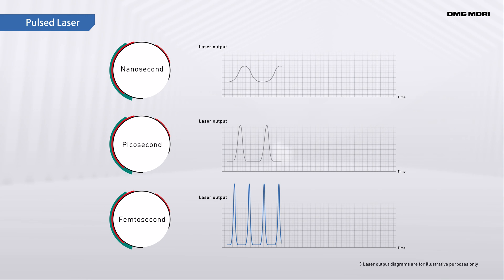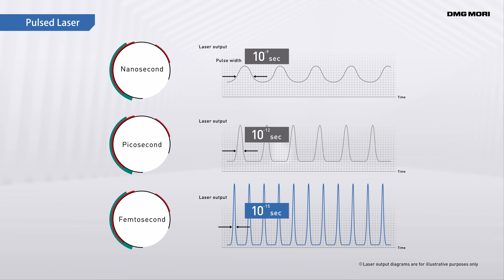There are three types of pulsed lasers, classified according to pulse width. A femtosecond laser has the shortest pulse width, only one quadrillionth of a second.